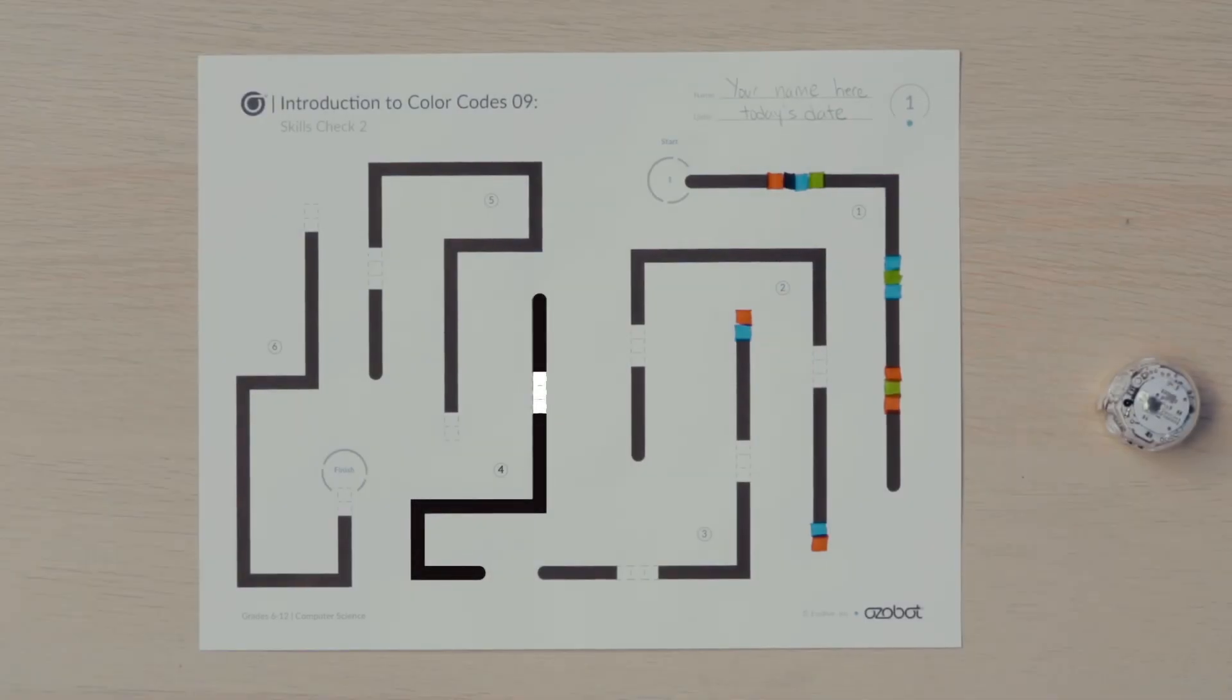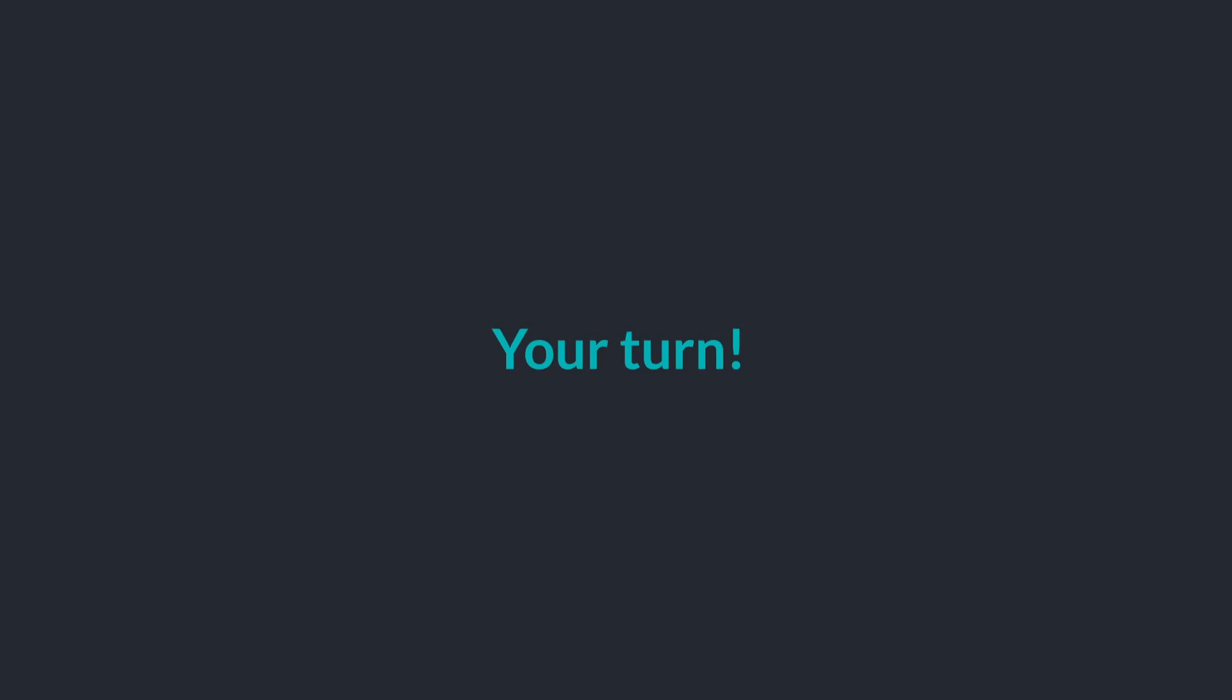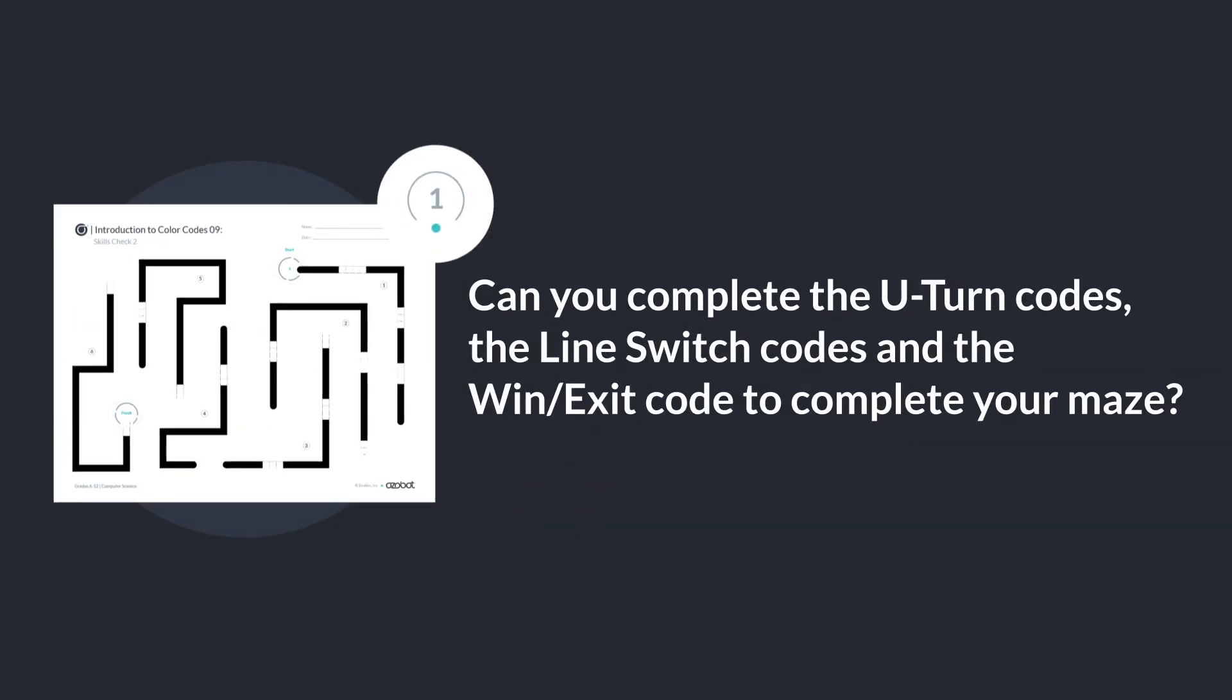Line four only has a space for a line switch code. Line five has a space for a U-turn code at the line end and a line switch color code. The last segment, six, has a U-turn at one end and a win exit play again near the finish. Can you complete the U-turn codes, the line switch codes, and the win exit code to complete your maze?